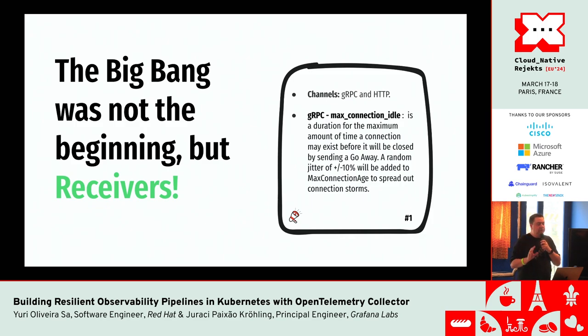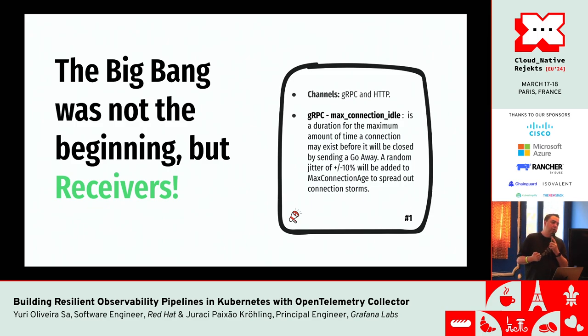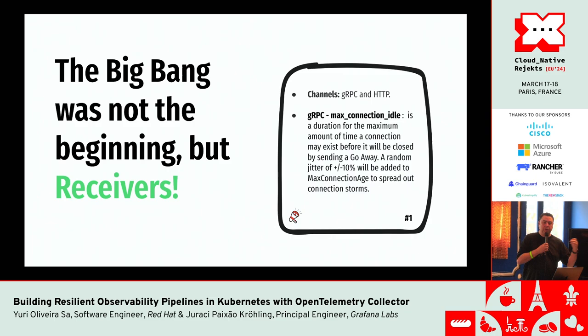This is just one example of the type of resiliency configuration we can apply to receivers. Within the OpenTelemetry Collector, most passive receivers follow common patterns like config gRPC and config HTTP. The point here is: take a look at the configuration options available to tweak your receiver configurations when it comes to networking.